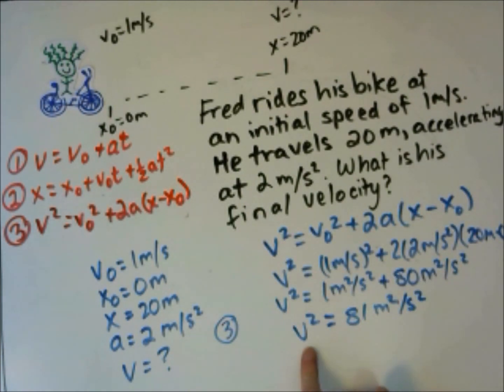Now we still have to solve for v. This is v squared, so we need to take the square root of both sides. And at the end his final velocity is 9 meters per second.